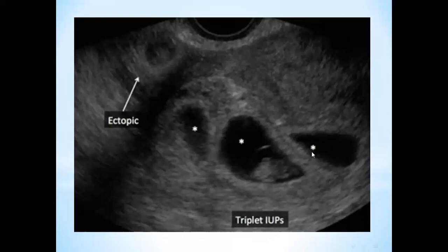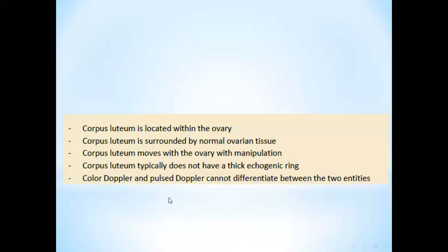This is a remarkable case of a triplet pregnancy — intrauterine and another ectopic pregnancy. The most challenging aspect of this diagnosis is differentiation of the ectopic pregnancy from a corpus luteum.